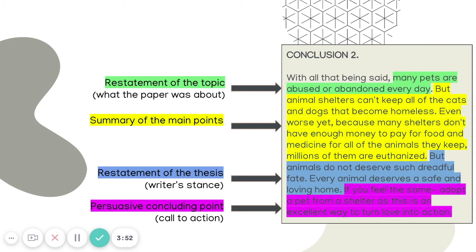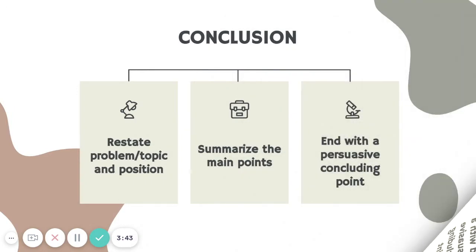Now, considering what I've said at the beginning of the video and the two examples you've just seen, we can say that a good conclusion contains the following main elements. A conclusion in an argumentative essay restates the thesis and the topic and summarizes the main points without giving any new information. It also ends with a persuasive concluding point that calls the reader to some action.